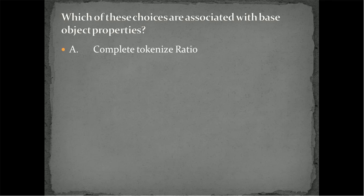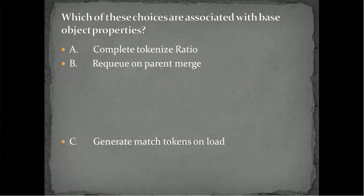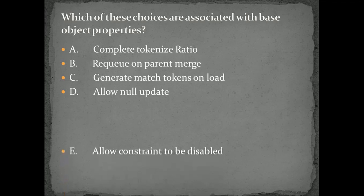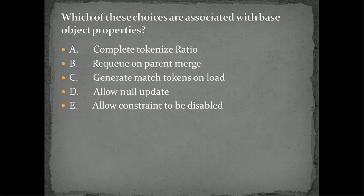First property is complete tokenization ratio. Second is requeue on parent merge. Third is generate match tokens on load. Allow null update. And allow constraint to be disabled. So the question is, out of these properties, what are the properties which are associated with the base object? I will give you one moment to think on that.